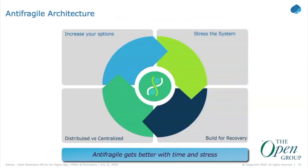Anti-fragile architecture principles really came together two years ago based on a book from Nassim Taleb, written in 2012 called Anti-Fragile. It's about all kinds of different systems — not necessarily computer systems — he talks about politics, government, and almost anything. Anti-fragile is not what you typically think of. We normally think of resilient or robust systems, but anti-fragile is something that actually improves with stress and time.